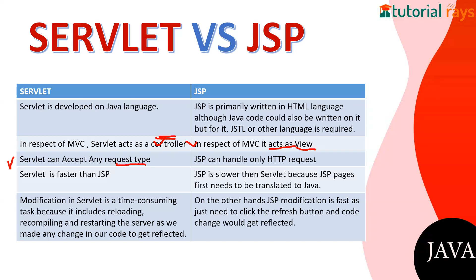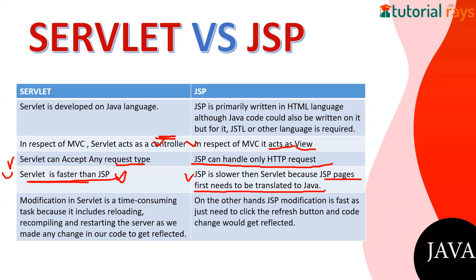Point number three: a Servlet can accept any type of request apart from HTTP; it can accept other requests as well. JSP can handle only HTTP requests — since most of JSP is HTML-based, it handles only HTTP. Another important point is that Servlet is faster than JSP because Java is already compiled. In the case of JSP, it is slower because JSP pages first need to be translated into Java before they are executed.